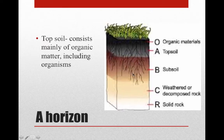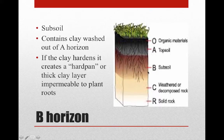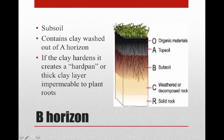Our next layer is the B horizon, called the subsoil. It contains clay washed out of the A horizon — as rain falls, it carries clay particles from the topsoil down into the subsoil. If the clay hardens it creates a hardpan, a thick clay layer impermeable to plant roots. Too much clay in the subsoil means roots can't penetrate, creating a poor fertility area for plants.